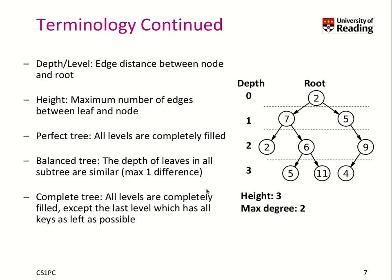When we organize a tree this way, we can say it has a certain level or depth, which is the distance between a node and the root. Nodes at the root level have a depth of 0. The next level has a depth of 1, and the level after that a depth of 2. The height of a tree is the maximum number of edges between any leaf and the root — in this case the maximum height is 3. We also have a maximum degree of 2, because some nodes have 2 children but no node has more than 2 children.